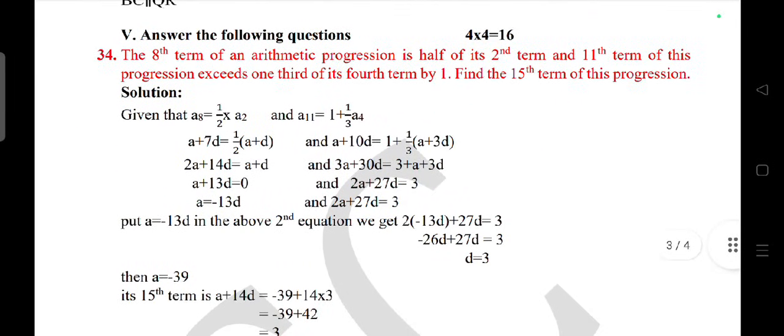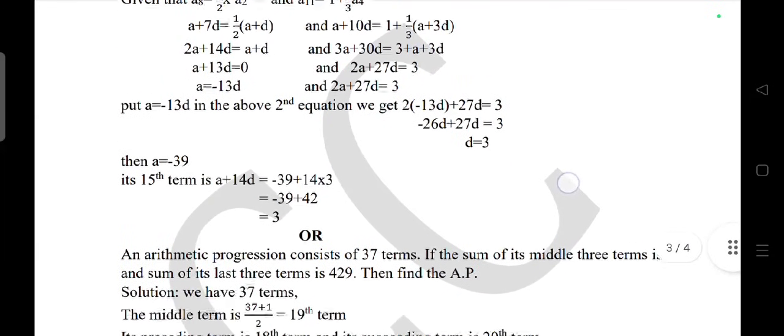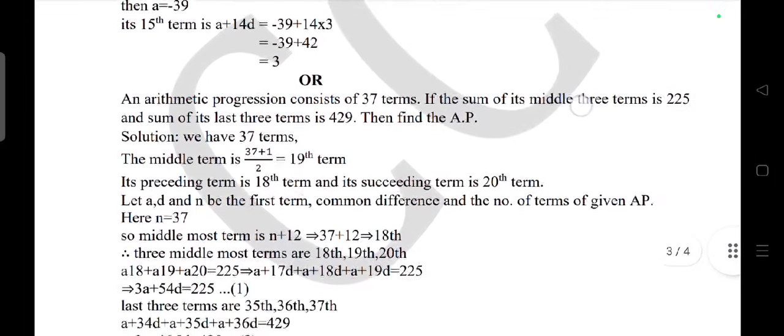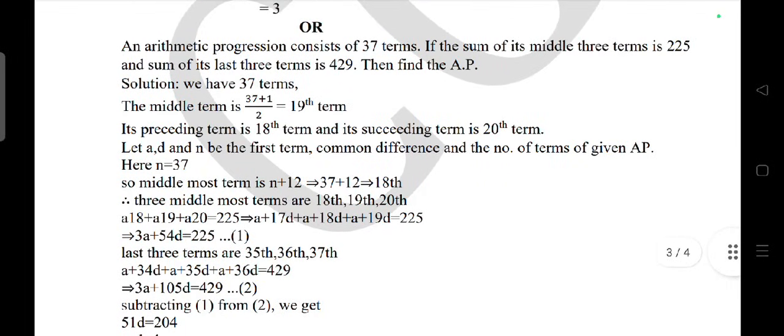Answer the following questions. Four mark question: The eighth term of arithmetic progression is half of its second term, and the eleventh term of progression exceeds one third of its fourth term by one. Find the 15th term of the progression. Or the arithmetic progression consists of 37 terms. If the sum of its middle three terms is 225 and sum of its last three terms is 429, then find the AP.